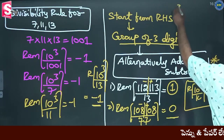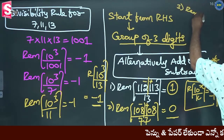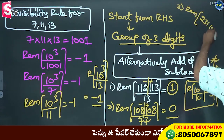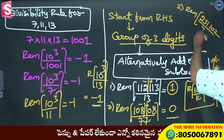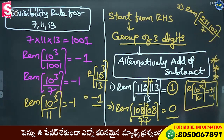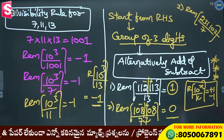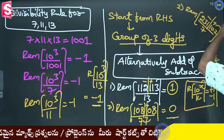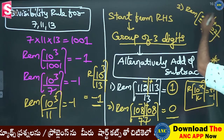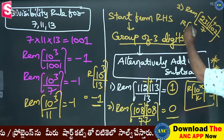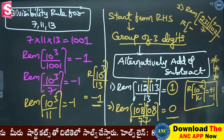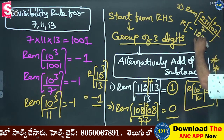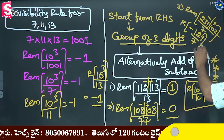Suppose for example: 213132 divided by 7. Answer is 8. Take a group of 3 digits, alternatively plus minus: 132 minus 213 equals minus 81. Divide by 7: minus 81 divided by 7. This gives remainder minus 2, i.e., remainder 8 from the positive side.